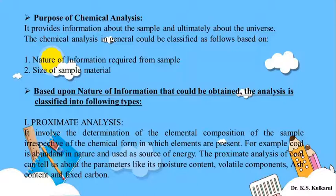Based upon the nature of information, chemical analysis is classified into four types. The first is proximate analysis. It involves the determination of the elemental composition of the sample irrespective of the chemical form in which the elements are present. It is a simple type of analysis where you find out the elemental composition of your sample. For example, proximate analysis of coal tells you about its moisture content, volatile components, ash content, and fixed carbon.